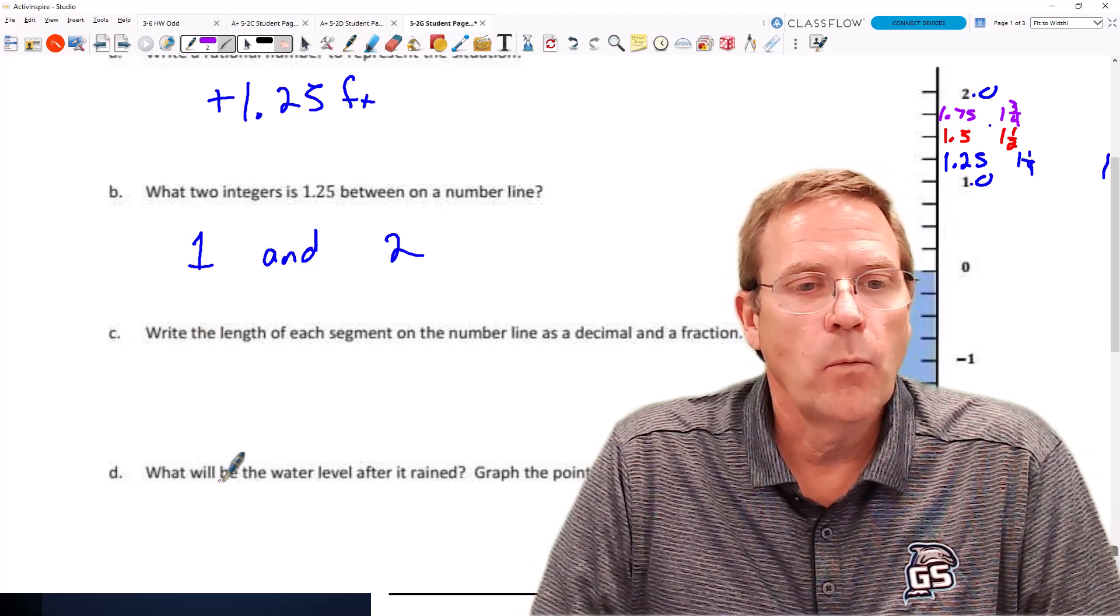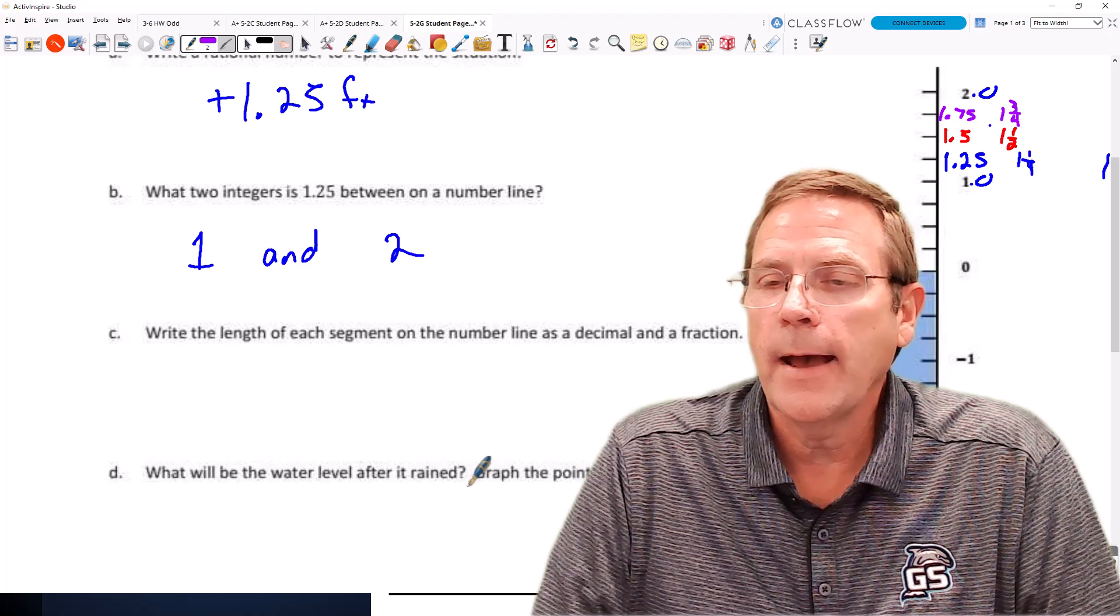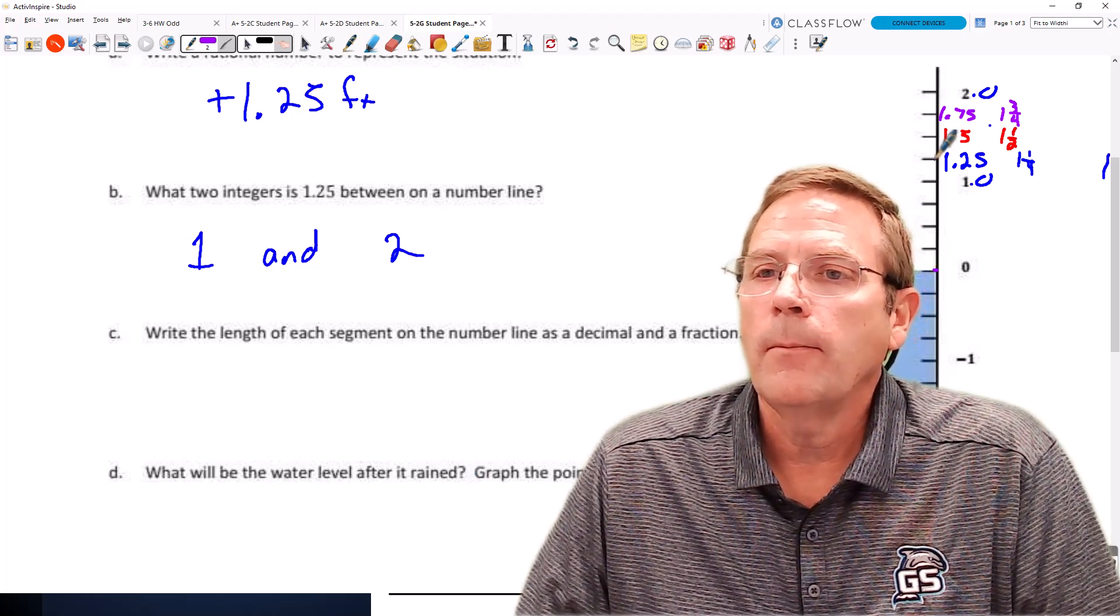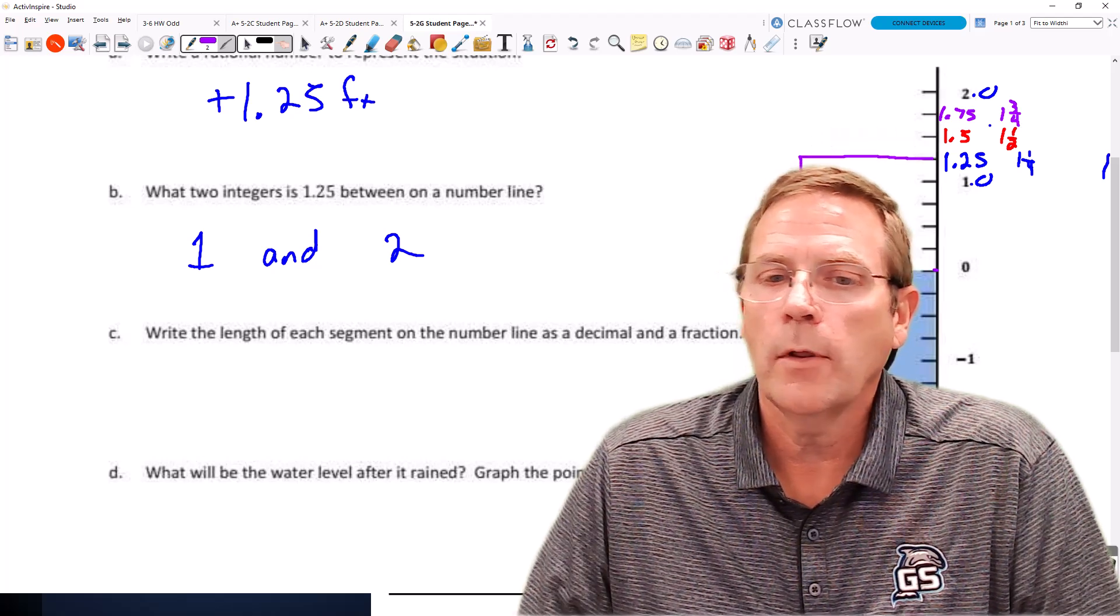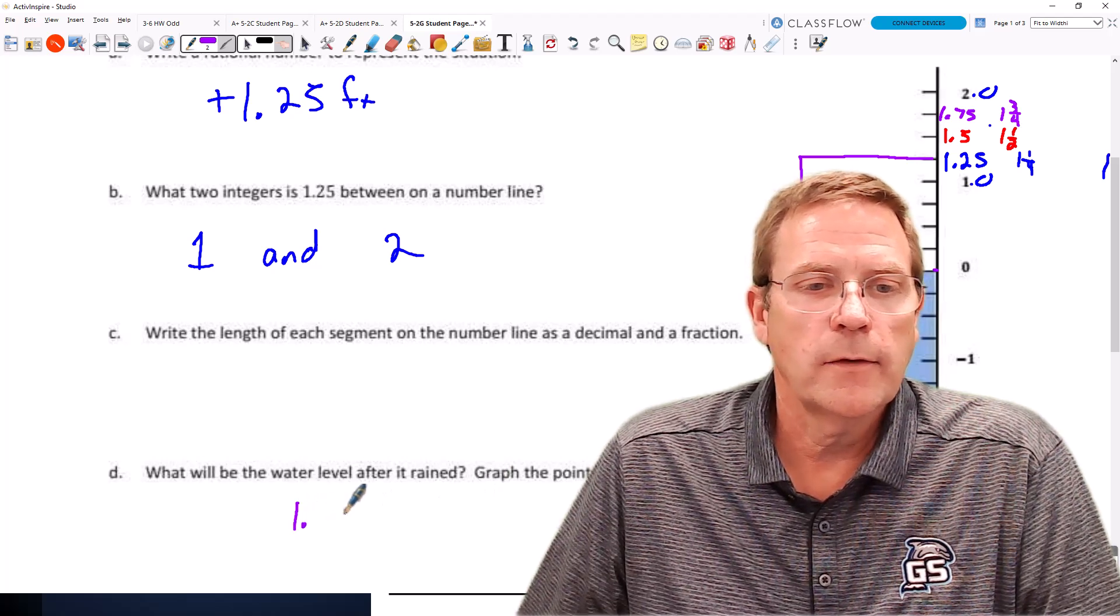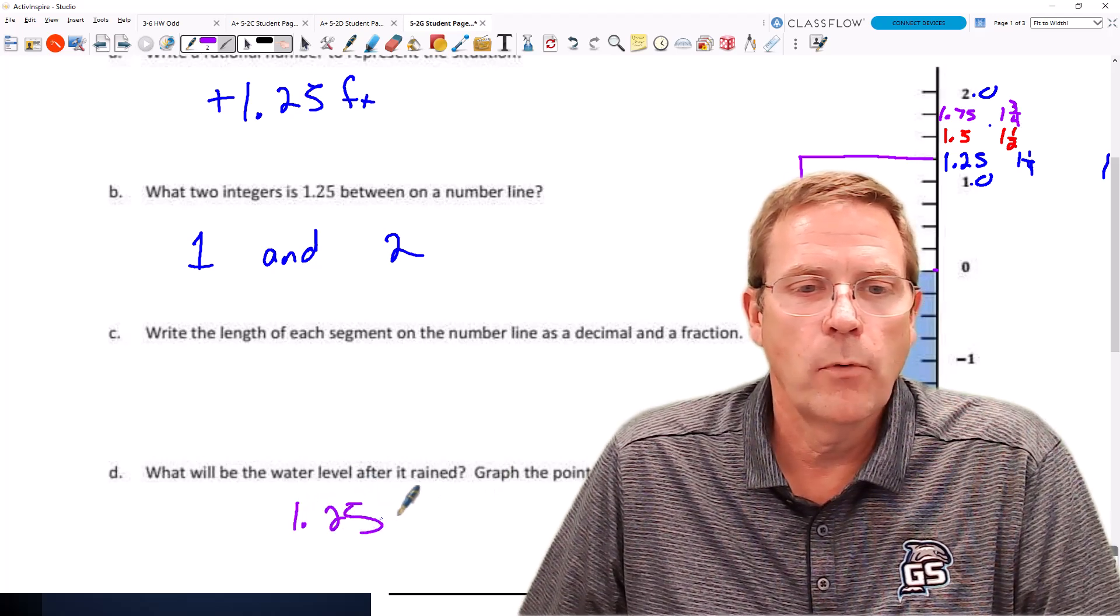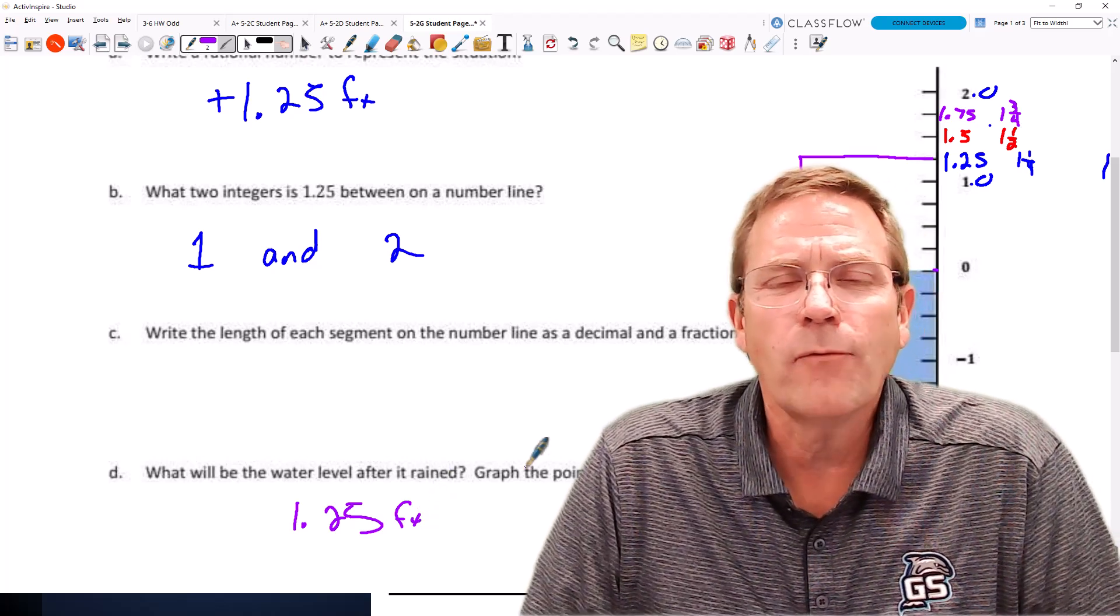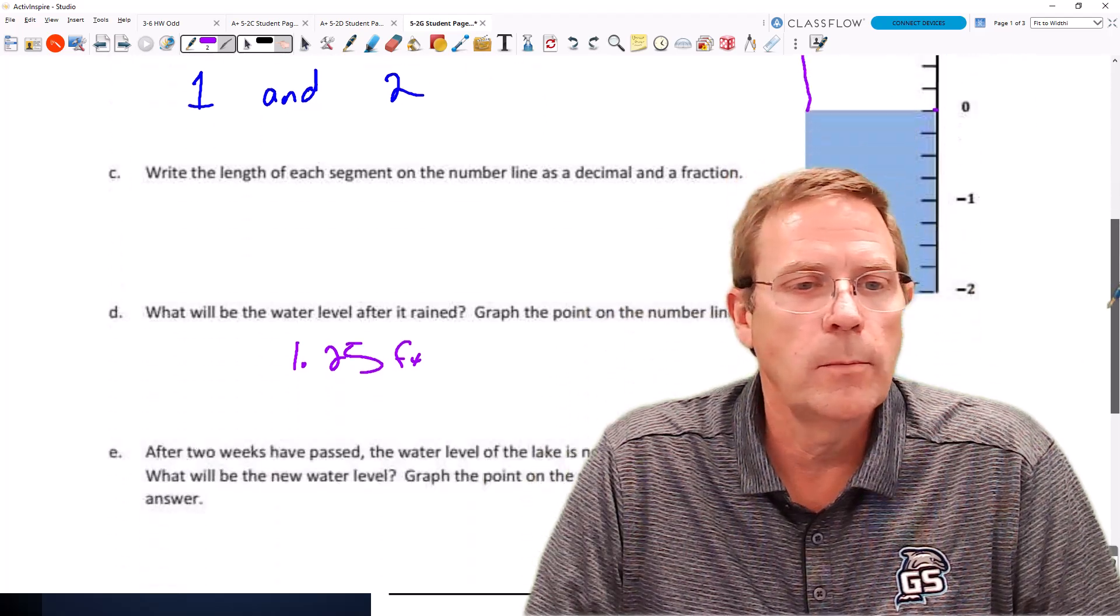And then it finally said, what will the water level be after it rained? Well, if it started out here at zero, that means right there is where our new water level is going to be. Graph the point on the number line, and it's going to take place at 1.25 feet.